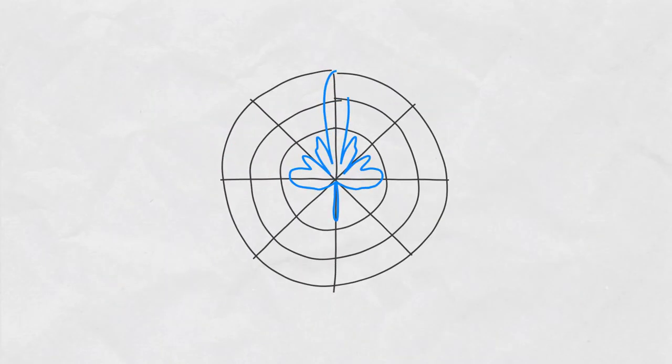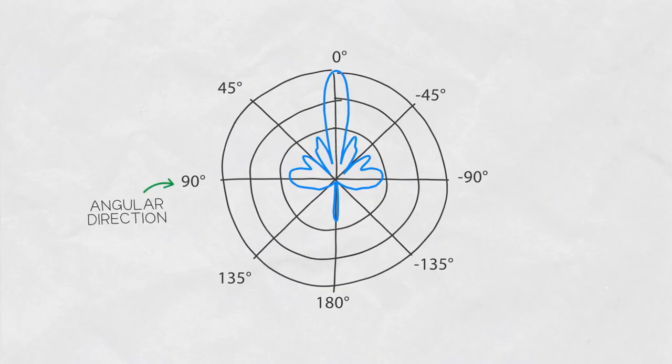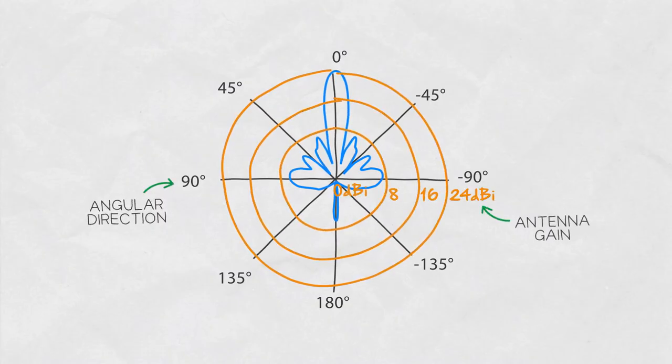Polar plots show how gain changes with angle. The numbers around the outer circle represent the angular direction of this radiation. The inner circle represents the axis that represents antenna gain. The gain value is read by looking where the points on the plot intersect with the inner circle.